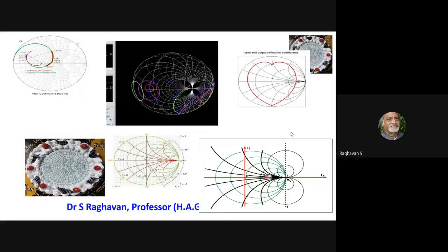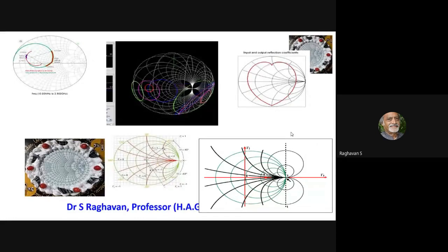This is the consolidated application of the Smith chart. Interestingly, if you draw the input reflection coefficient and output reflection coefficient and join all the points, it automatically comes out as a cardioid or heart shape — not drawn purposely. The take-home message: one should have an affinity towards the Smith chart, which contains so many lambdas, including the 3D Smith chart.